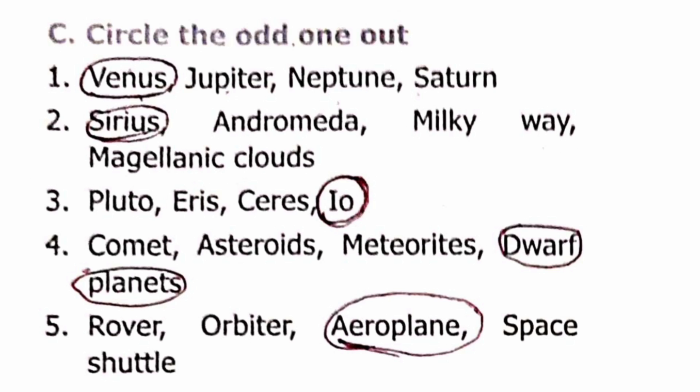Section C: Odd One Out. Question 1: The odd one is Sirius. Question 2: The odd one is Pluto. Pluto, Aries, and Ceres are dwarf planets; Io is a satellite of Jupiter, so Io is the odd one out.